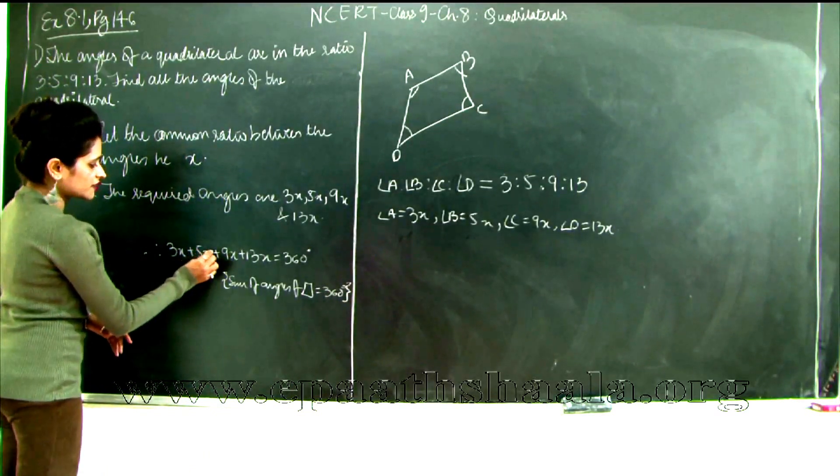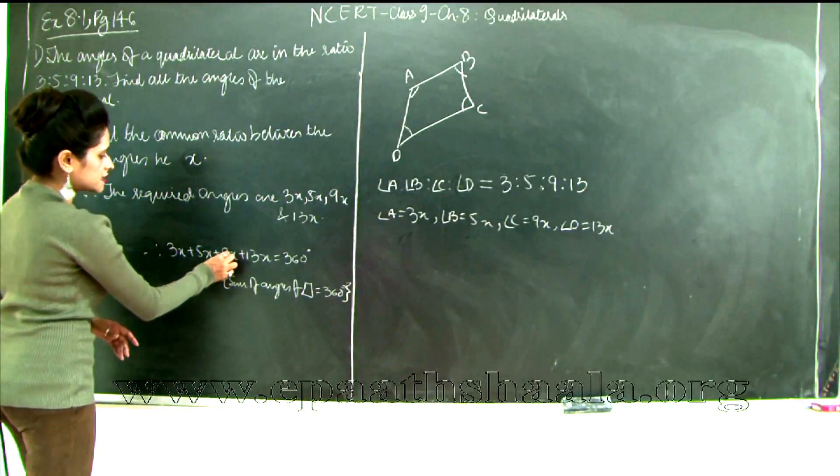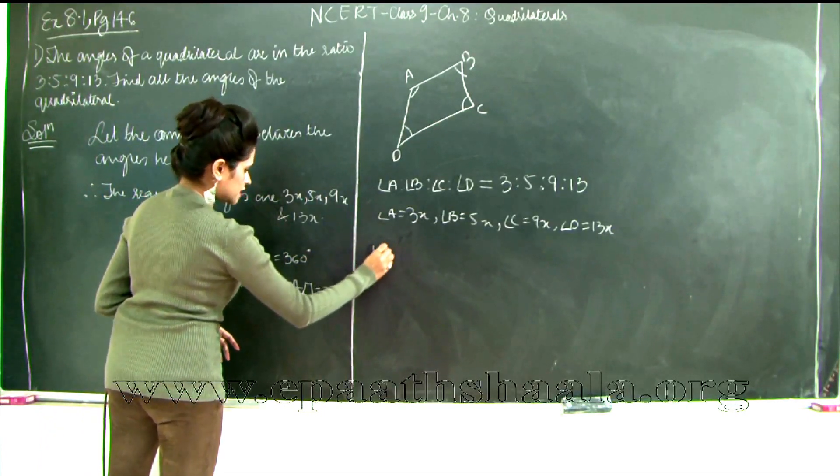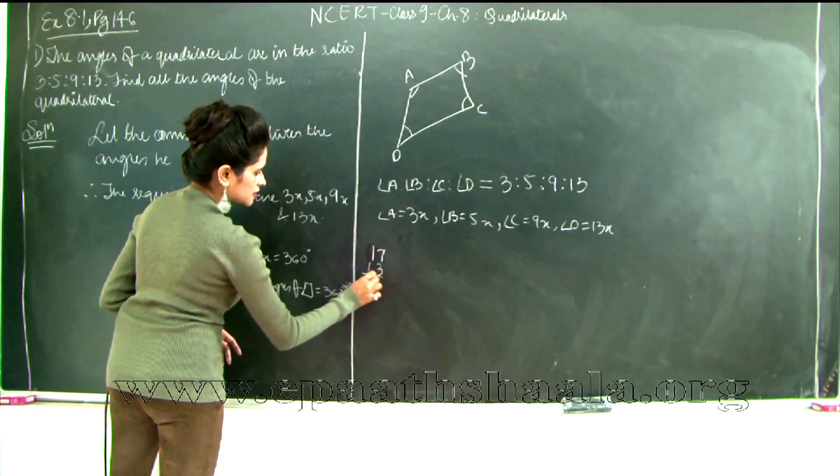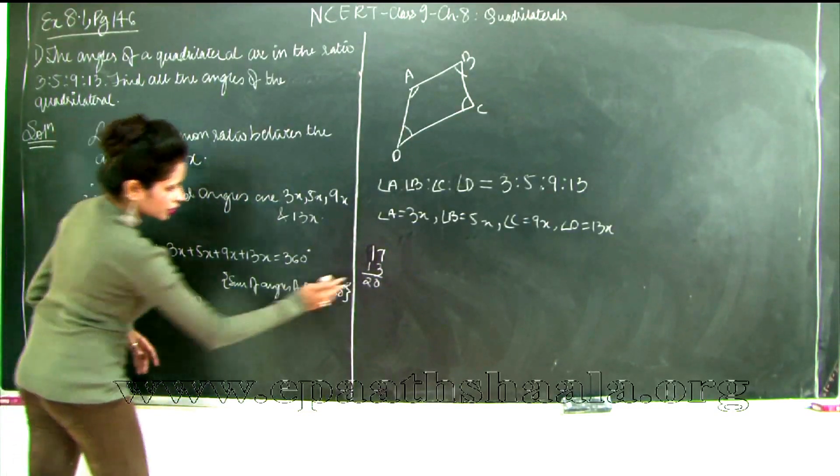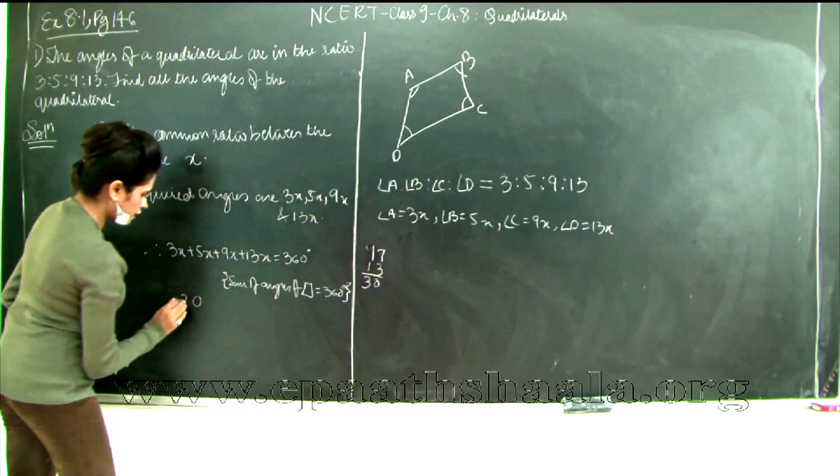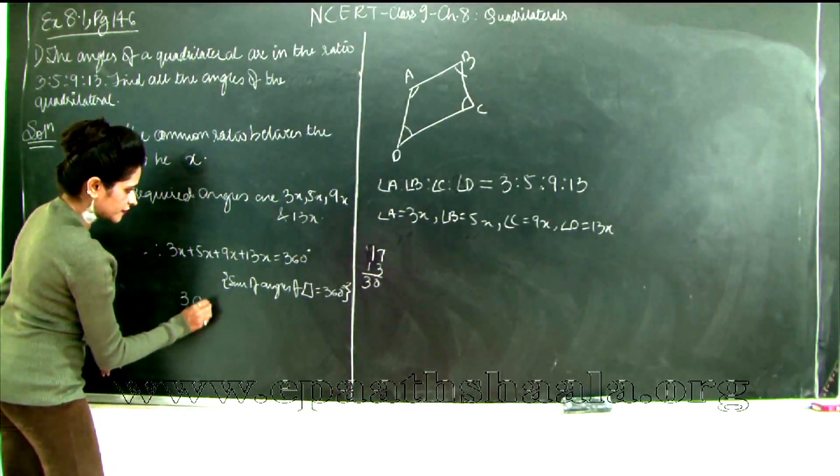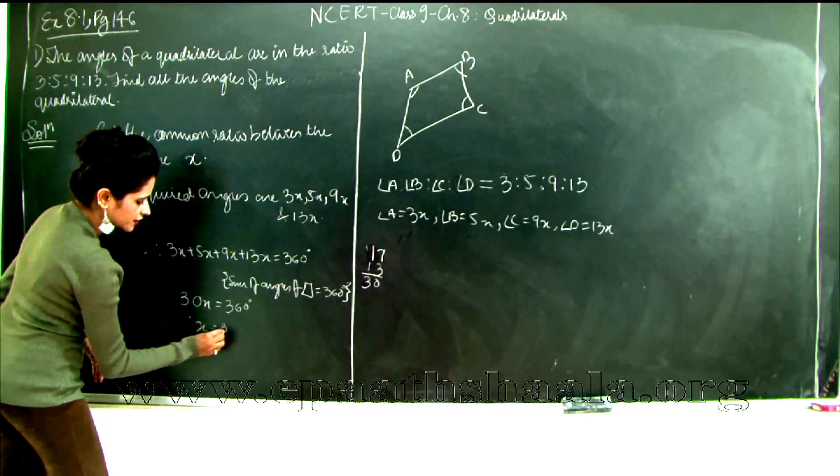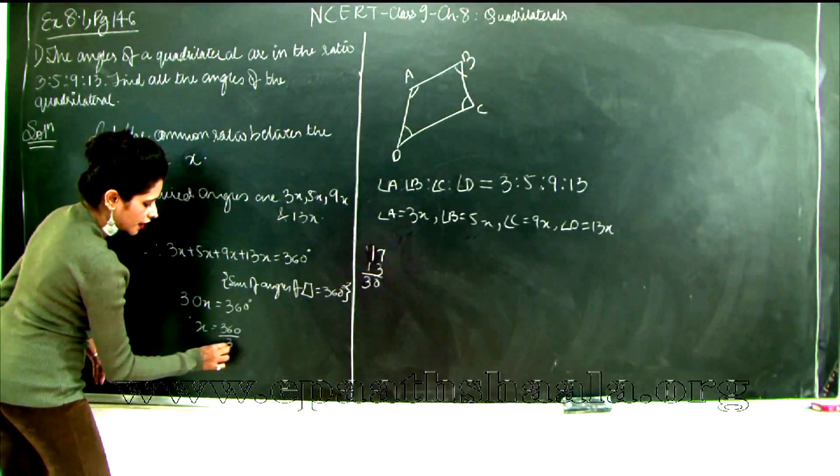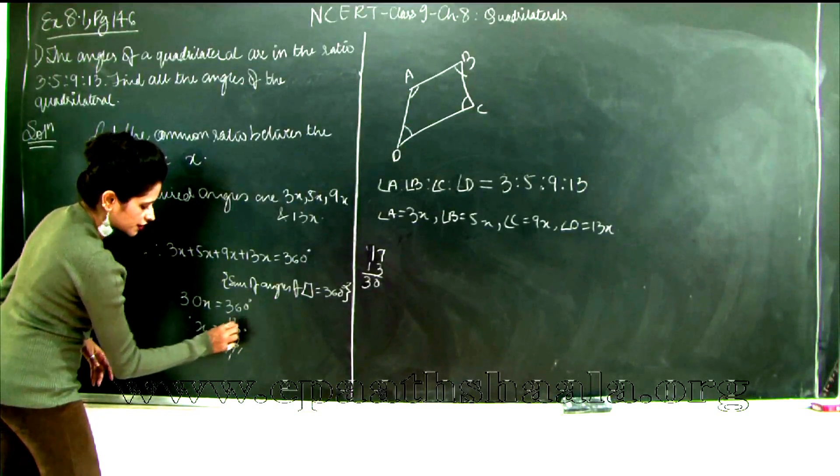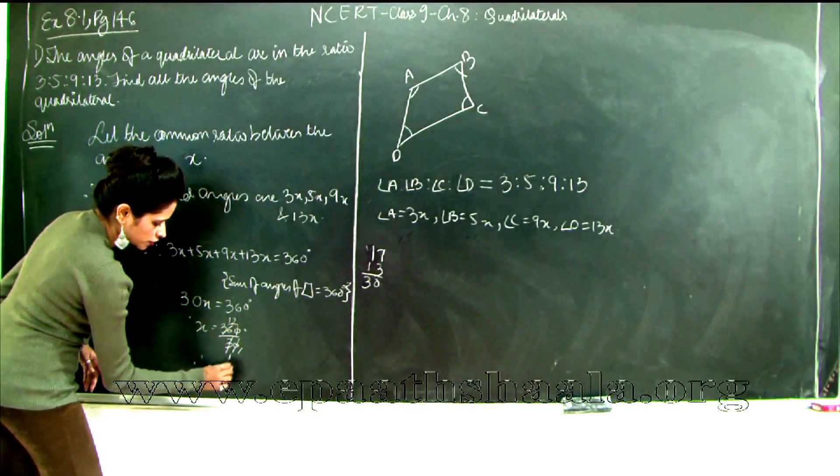So let's add these numbers. 3 plus 5 is 8. 8 plus 9 is 17. 17 plus 13 is 30. So what do I get? 30x is equal to 360 degrees. Therefore I get x as 360 degrees divided by 30. So when you cancel what do you get? 3 12s are 36. Therefore x is equal to 12.